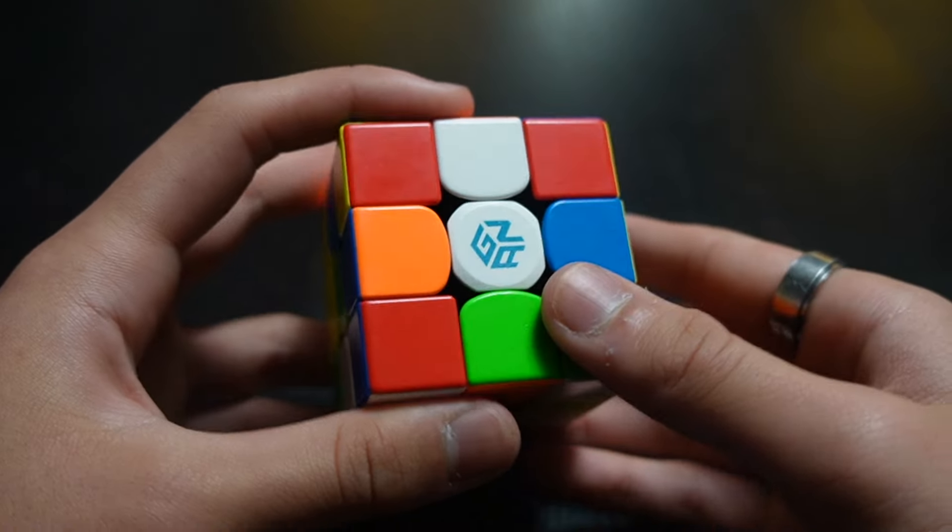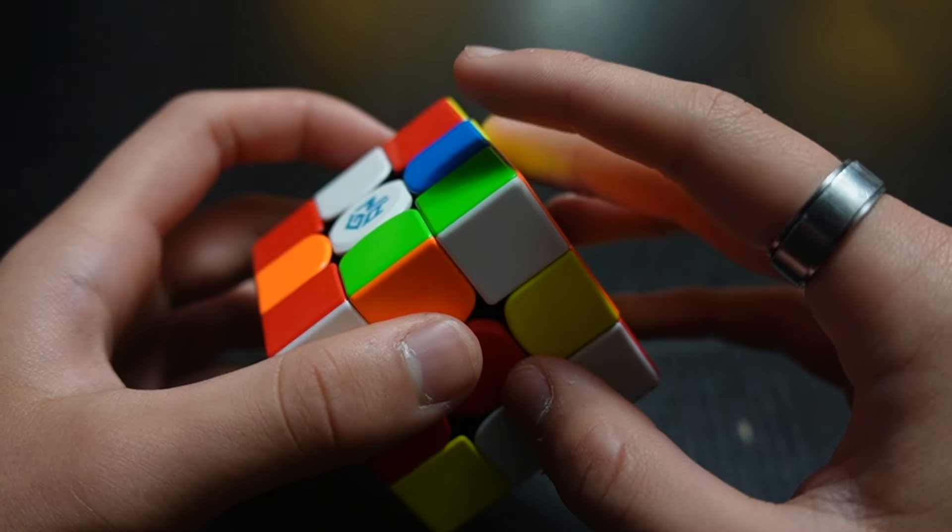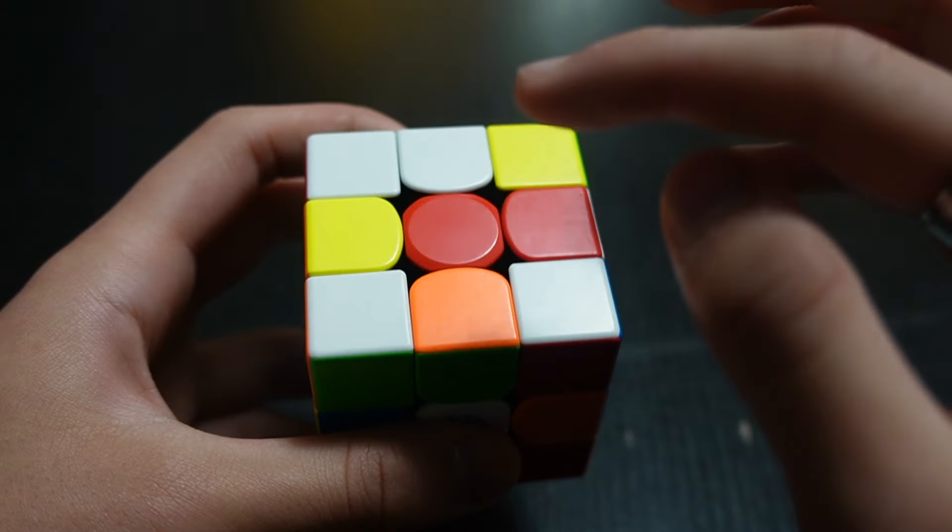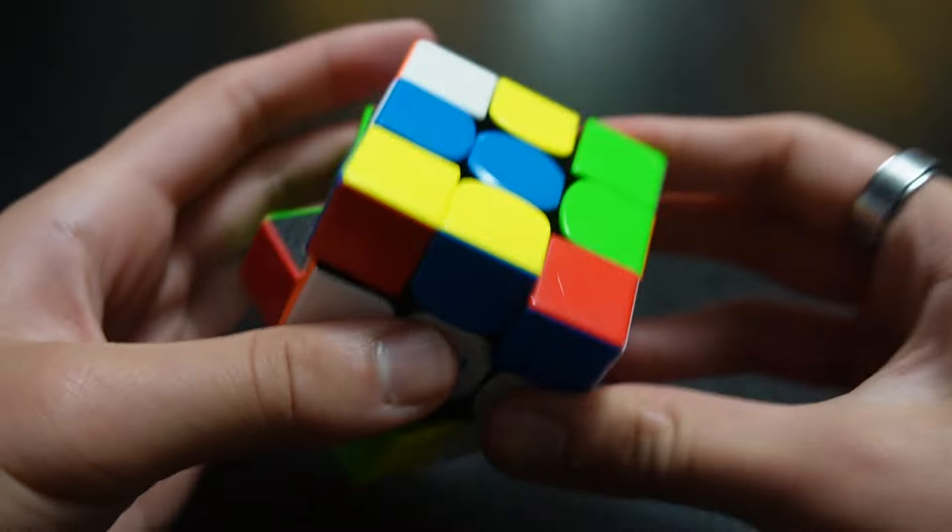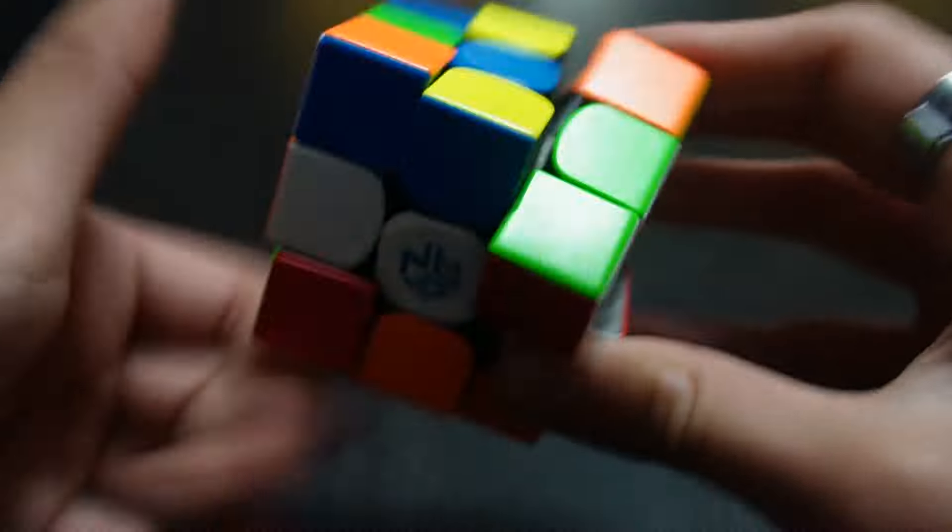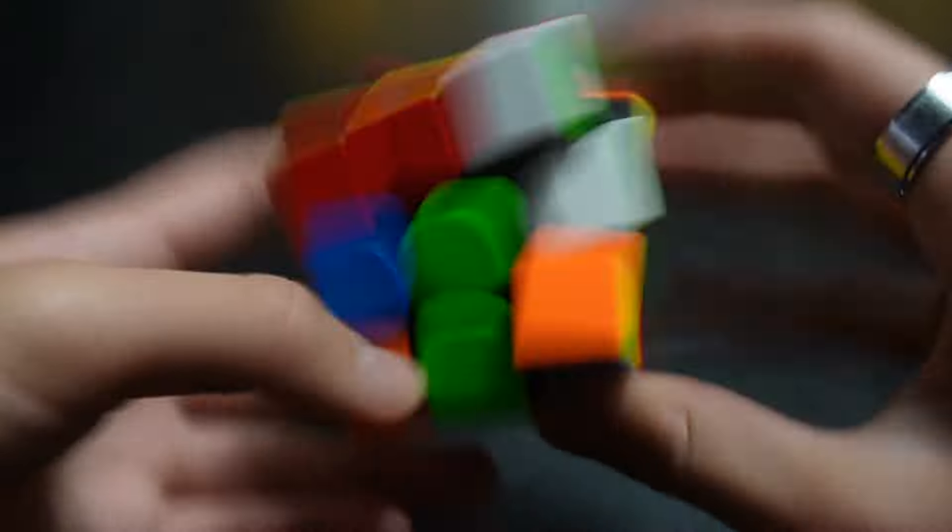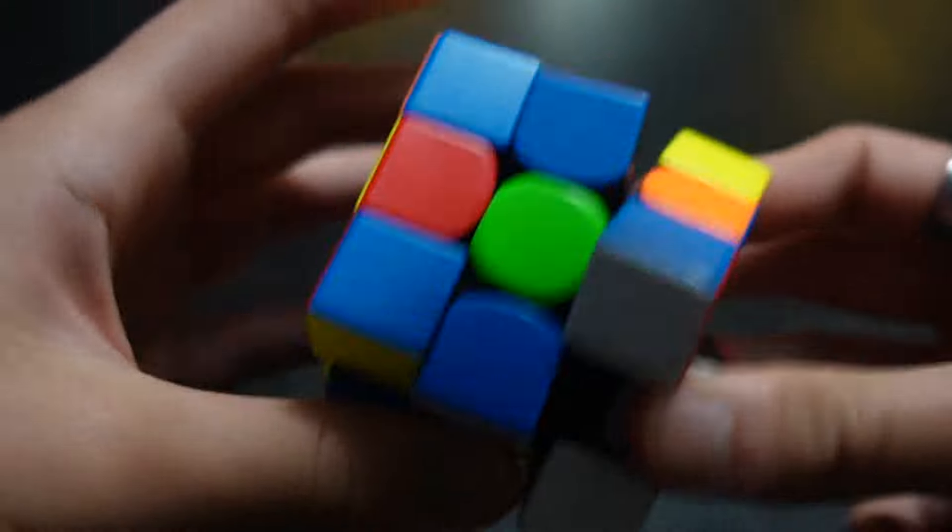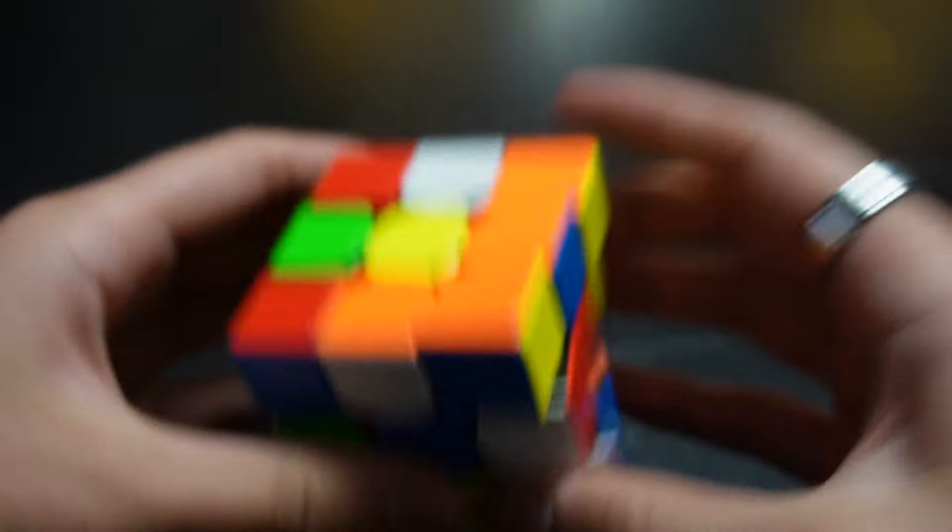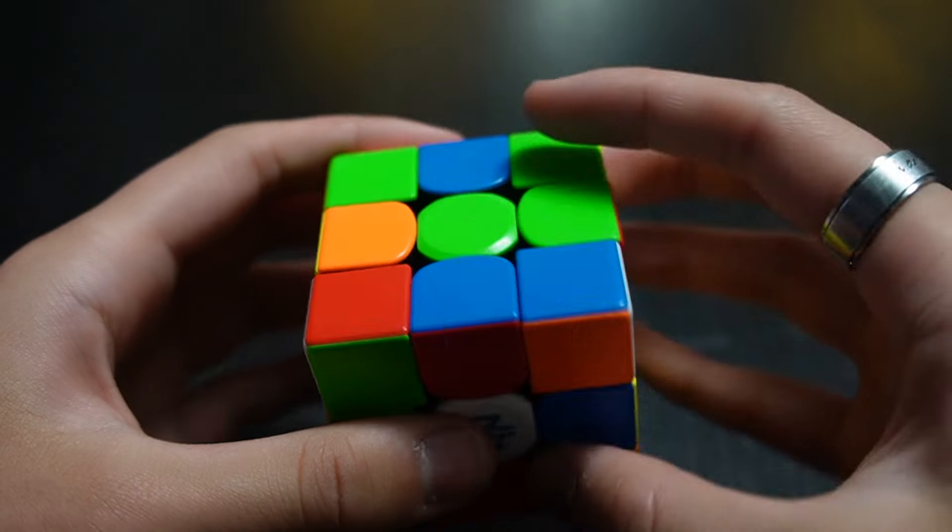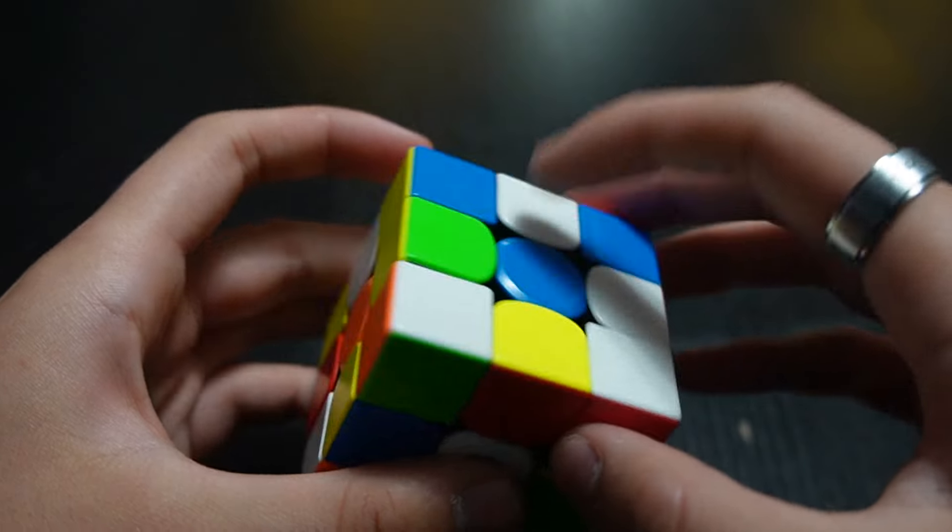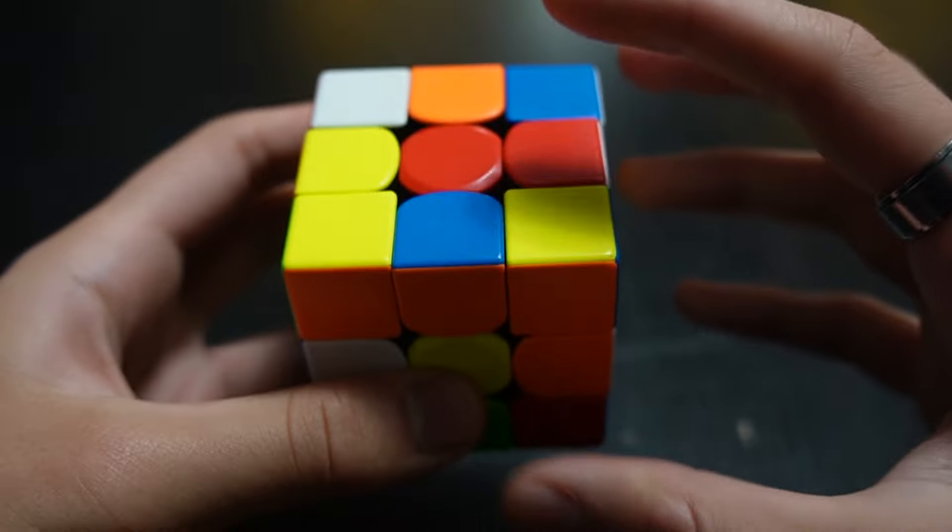An important thing to remember is white will always be opposite of yellow, red will always be opposite of orange, and green will always be opposite of blue. But even if I scramble it, yellow is still opposite of white, green is still opposite of blue, and orange is still opposite of red.